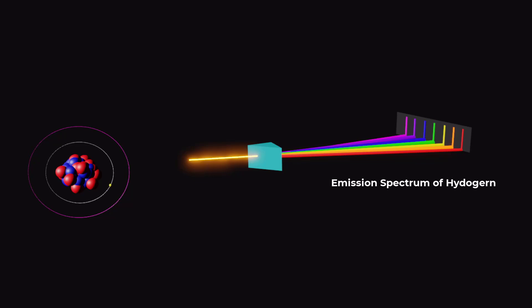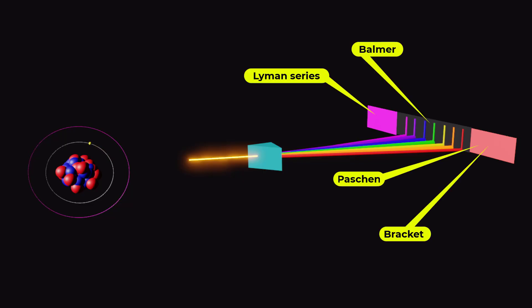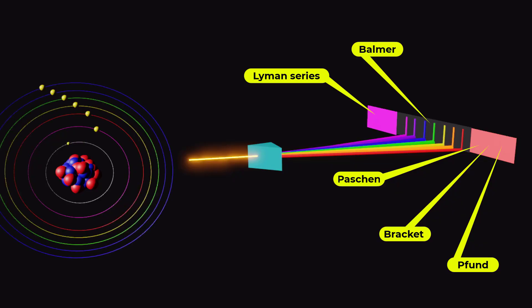For example, the emission spectrum of hydrogen consists of five different sets of wavelengths: the Lyman, Balmer, Paschen, Brackett, and Pfund series. Each series corresponds to a different atomic transition.